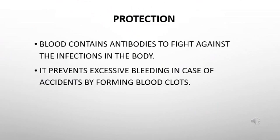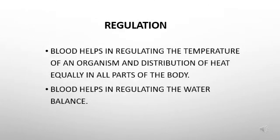The second very important function performed by the blood is protection. Blood contains antibodies to fight against infections in the body. It prevents excessive bleeding in case of accidents by forming blood clots. The next important function performed by the blood is regulation. Blood helps in regulating the temperature of an organism and distribution of heat equally in all parts of the body. Blood also helps in regulating the water balance.